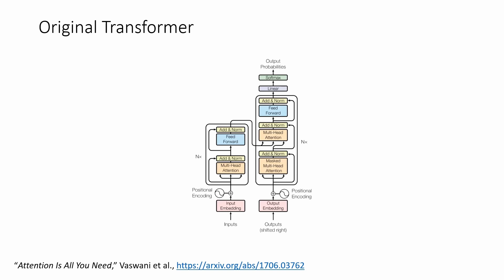A lot of the focus has been on the attention part because we think we understand the feed-forward neural network part a little better. If you look closely, there's also an arrow that goes to the left and comes around the top, feeding back into the normalization — adding to whatever comes out of the multi-head attention. This is the residual connection.